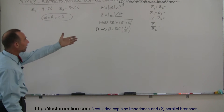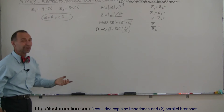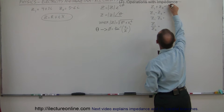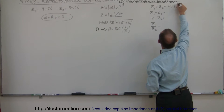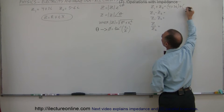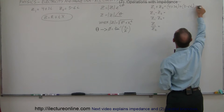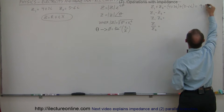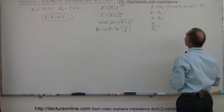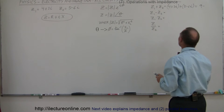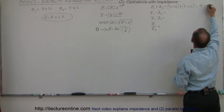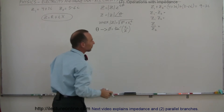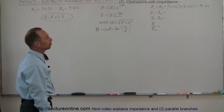First, let's add the two together, which is fairly simple. So that would be 4 plus 3i, plus 5 minus 6i, which equals 4 plus 5, which is 9, and 3 minus 6, which is minus 3i. So the sum is 9 minus 3i. Note: it doesn't matter whether you write the i in front or behind.